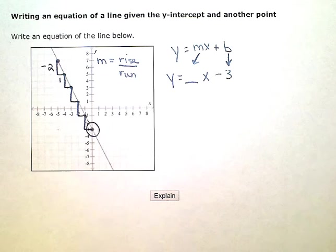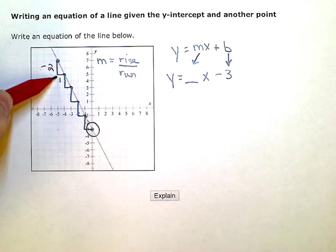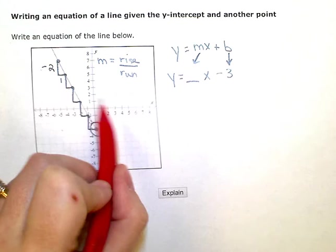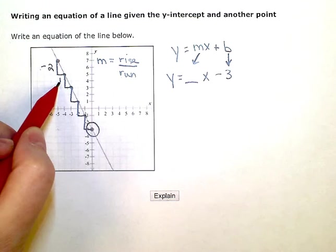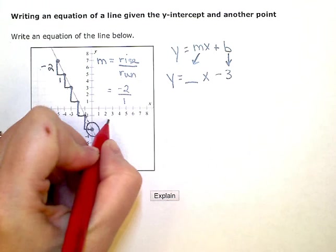My rise is negative two. That's my up or down number. I'm going down two. The run is my left and right number. I'm going over one. So this would be negative two over one, which just simplifies to negative two.